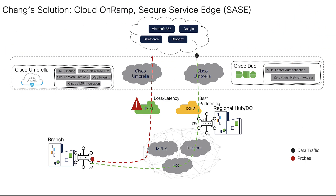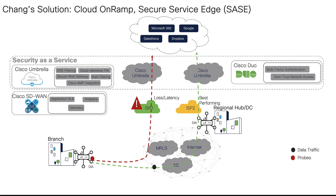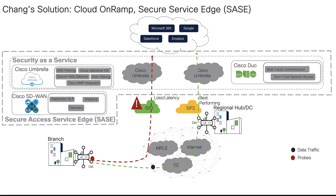Cisco Umbrella unifies firewall, secure web gateway, DNS, and CASB functionality in one single integrated cloud-native platform. The Cisco Duo network gateway is a reverse proxy that provides zero-trust access to supported applications with multi-factor authentication. Cisco Umbrella and Cisco Duo together is often referred to as a security-as-a-service offering. Combined with the observability capabilities such as analytics and telemetry of the existing SD-WAN solution, this is called Secure Access Service Edge, or SASE. When you configure Cloud OnRamp for SaaS for a site to connect over SIG tunnels, you gain secure access to SaaS applications over the internet.